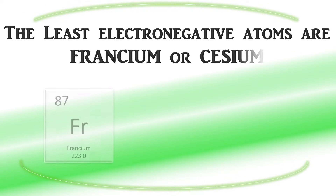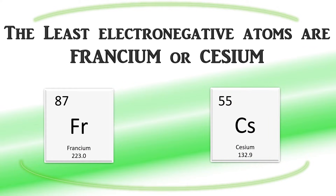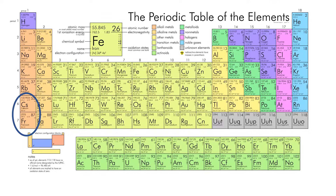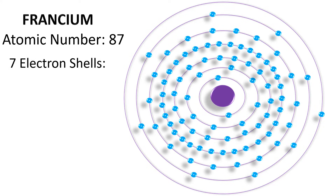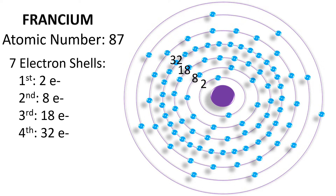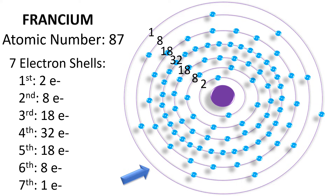The least electronegative atoms are either francium or cesium, depending on which electronegativity scale you use, because it's hard for these elements to get more electrons. Notice their location on the bottom left of the periodic table. Francium has an atomic number of 87 and it has 7 electron shells. The first shell is filled with 2 electrons, the second with 8, the third with 18, and the rest filled accordingly up until the 7th shell. Notice in the last electron shell there's only one electron, so you're going to need a lot of energy to fill more electrons in that outermost shell — francium would rather give up that electron.